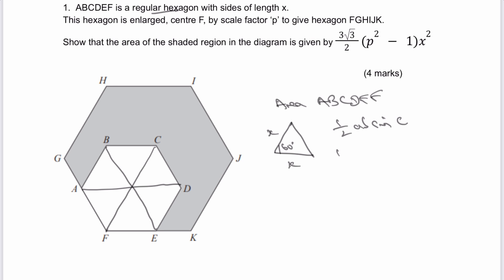So therefore we can write this as a half, multiplied by X, multiplied by X, multiplied by root 3 over 2, which is the sine of 60 degrees. And when we sort all that out and make it look a little bit more presentable, we're going to get that's equal to root 3 over 4 multiplied by X squared.